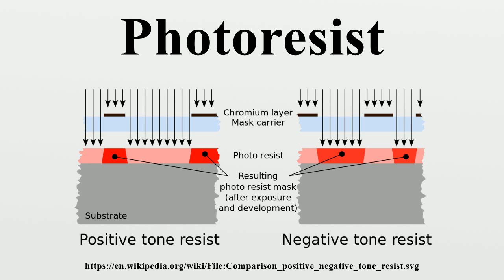Electron beam lithography usually relies on resists dedicated specifically to electron beam exposure. DNQ Novolac Photoresist: One very common positive photoresist used with the I, G, and H lines from a mercury vapor lamp is based on a mixture of diazoanaphthoquinone (DNQ) and Novolac resin. DNQ inhibits the dissolution of the Novolac resin, but upon exposure to light, the dissolution rate increases even beyond that of pure Novolac. The mechanism by which unexposed DNQ inhibits Novolac dissolution is not well understood but is believed to be related to hydrogen bonding. DNQ Novolac resists are developed by dissolution in a basic aqueous solution.